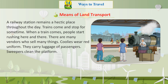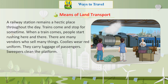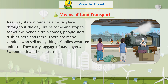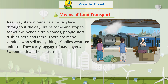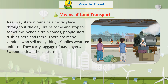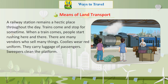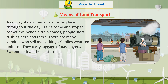A railway station remains a hectic place throughout the day. Trains come and stop for some time. When a train comes, people start rushing here and there. There are many vendors who sell many things. Coolies wear red uniforms and carry luggage for passengers. Sweepers clean the platform.